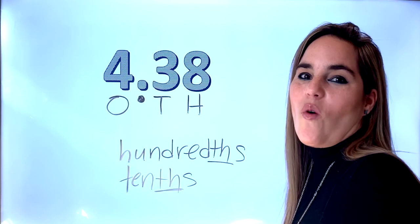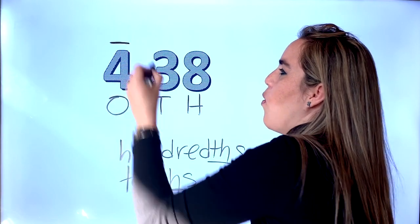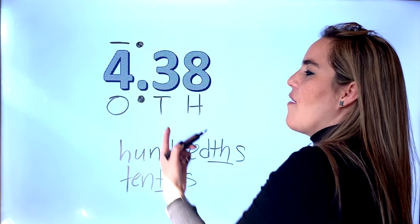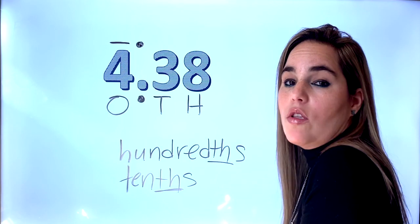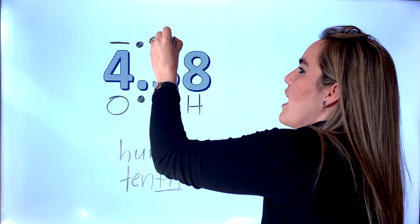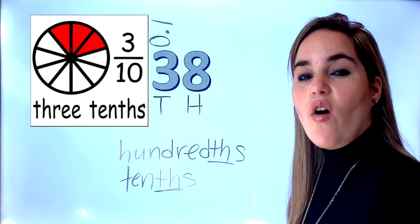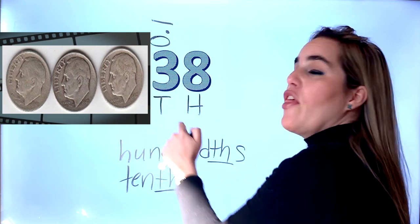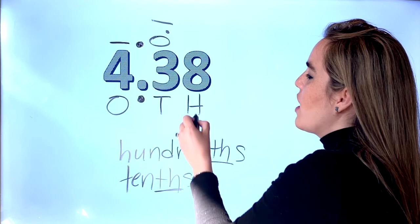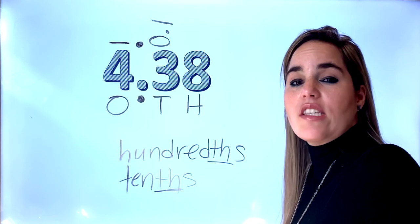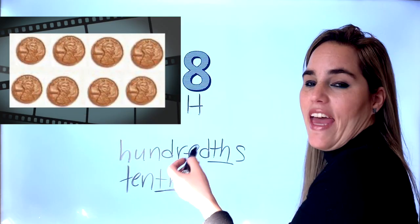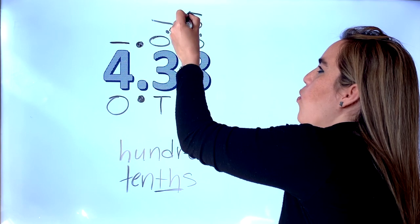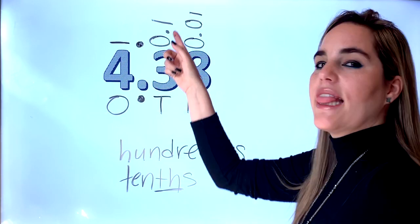We know that the ones are groups of one, so you only write a one. Then you write your decimal point. For the tenths we do not have whole numbers, so it's zero-point-one. If you divide the whole into ten equal parts and three are shaded — or thinking in dollars, one dollar would be thirty cents. For the hundredths, thinking in dollars, it's like one penny, so eight hundredths is like eight pennies: zero-point-zero-one.